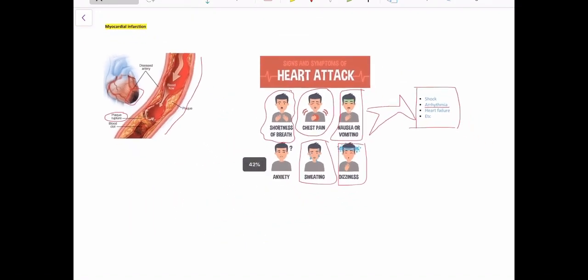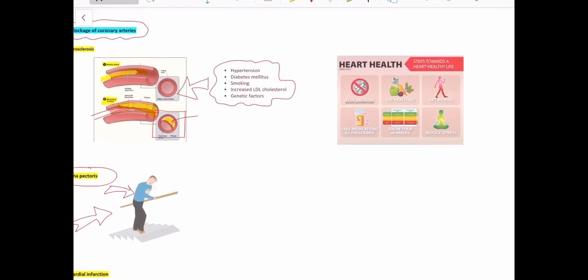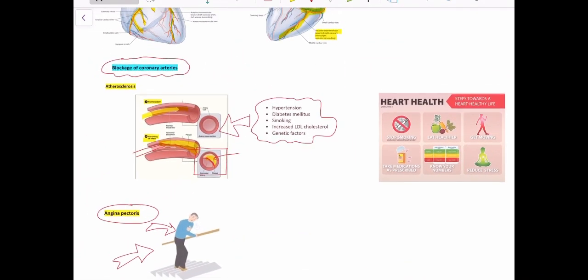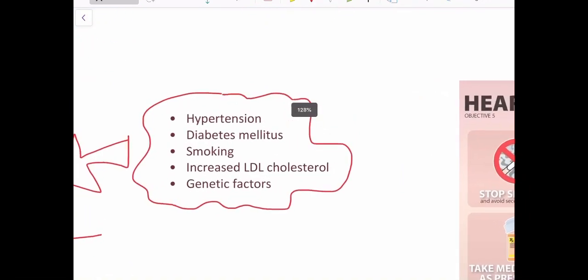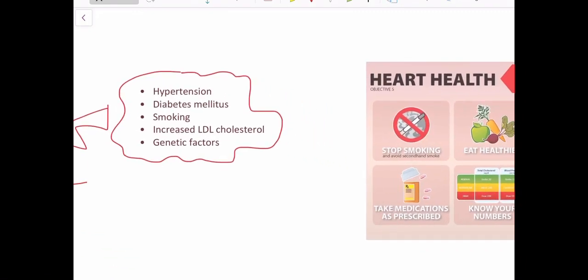Ischemic heart diseases and atherosclerosis are very common problems seen in the population. Prevention of this is also very important when it comes to reducing the disease burden. For that you need to reduce these risk factors, and this can be done by lifestyle modifications.